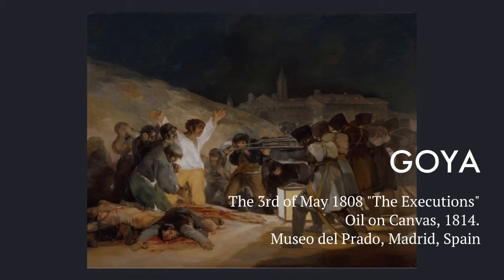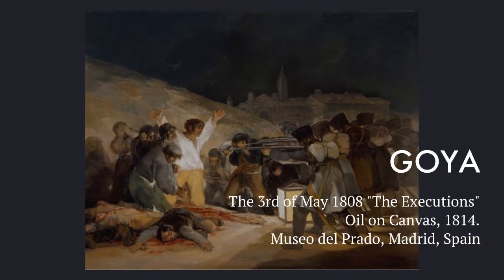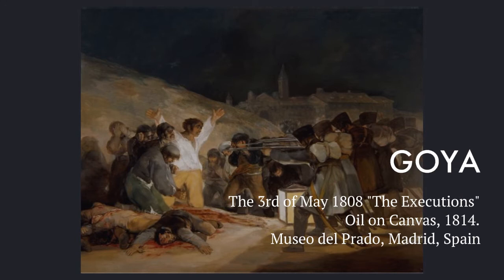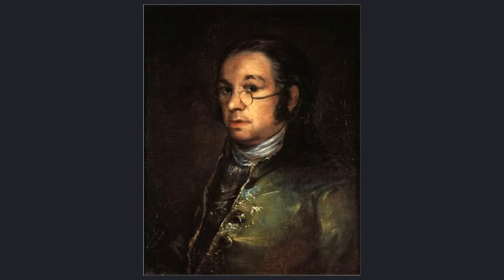The 3rd of May, 1808, also known as The Executions, was painted by Francisco de Goya y Lucientes. It is oil on canvas from 1814. You can see it at El Museo del Prado in Madrid, Spain. Goya is recognized as one of the great Spanish painters, along with the likes of Diego Velázquez, Salvador Dalí, and Pablo Picasso.